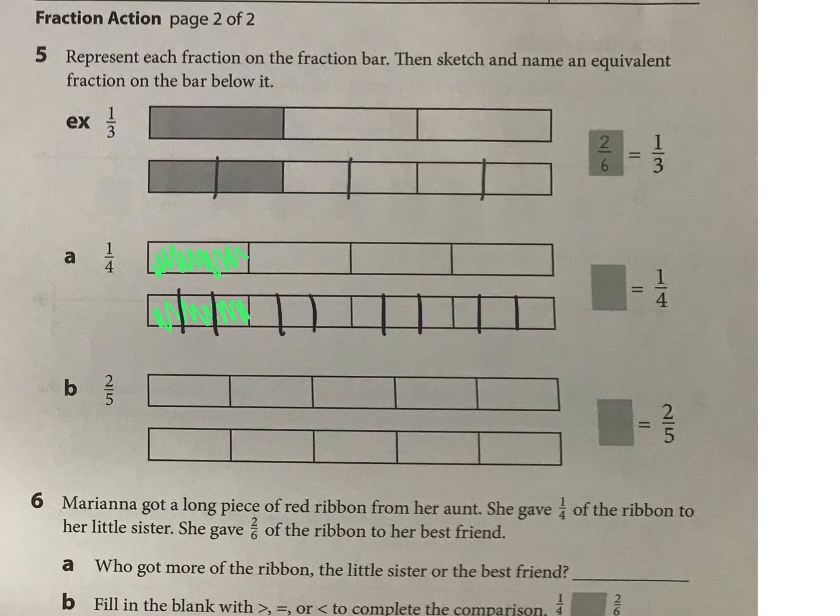And that will give me twelfths, right? So how many twelfths are filled in? I have one, two, three twelfths. So one fourth is equal to three twelfths.